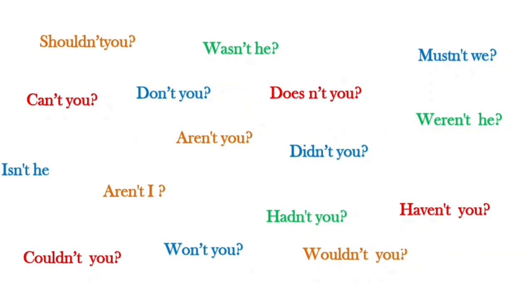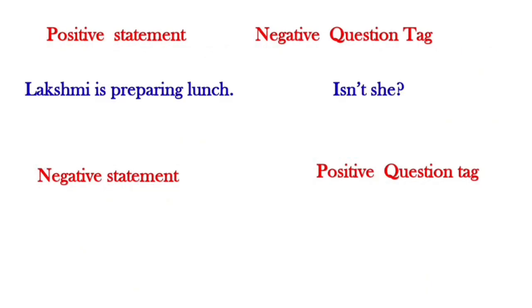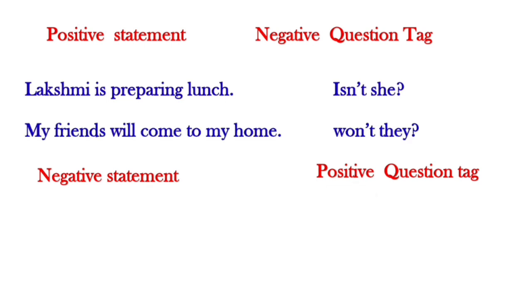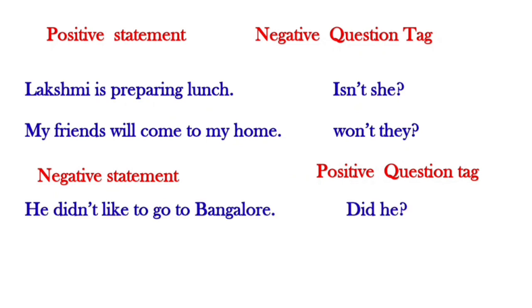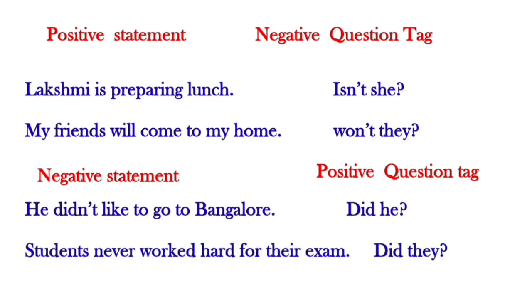A negative question tag goes with a positive statement. When the statement contains words like 'not,' 'never,' or 'seldom,' that makes it negative. For example: Positive statement — 'Lakshmi is preparing lunch' → negative question tag: 'Isn't she?' 'My friends will come to my home' → 'Won't they?' Negative statement — 'He didn't like to go to Bangalore' → positive question tag: 'Did he?' 'Students never worked hard for their exam' — 'never' makes it negative → positive question tag: 'Did they?'